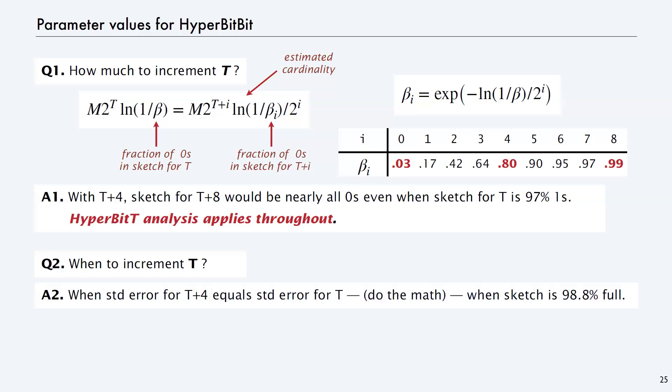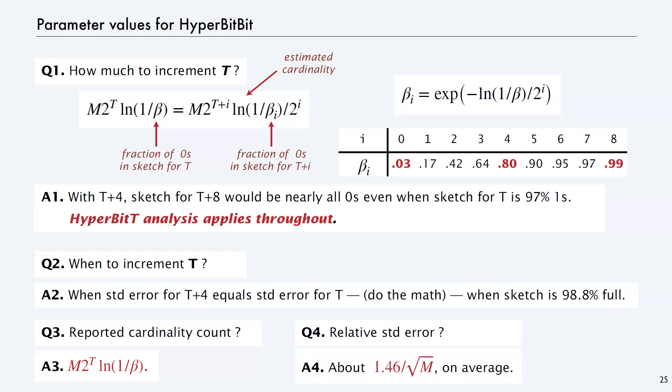When to increment T: increment when the standard error for T+4 equals the standard error for T, so we coast along at less than that standard error. If you do the math, that's when the sketch is 98.8% full. The analysis applies throughout, so the estimate is m · 2^T · log(1/beta), and the standard error is 1.46 / sqrt(m), which is the bound on the range of beta we're always in because we follow this regimen.